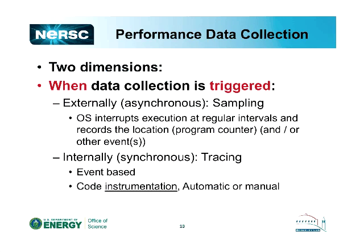When we start to talk about performance data collection, there are two dimensions that are important. The first is what type or when the data are collected — how the data collection is triggered. There are two approaches. You can happily analyze the performance of your code without knowing this terminology, but it comes up quite a bit in the man pages for the Cray tool. It simply comes down to whether the performance analysis is triggered internally within your code or externally by some other agent — basically the operating system.